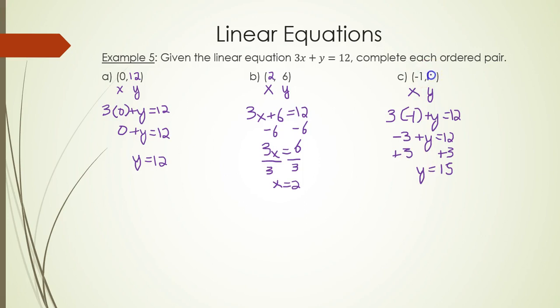y = 15. So the ordered pair is (-1, 15). So that's a little introduction to graphing and how to graph linear equations and complete ordered pairs for them. Thanks for watching.